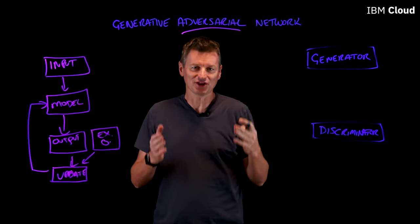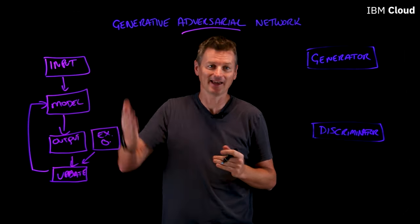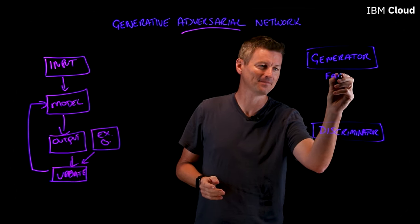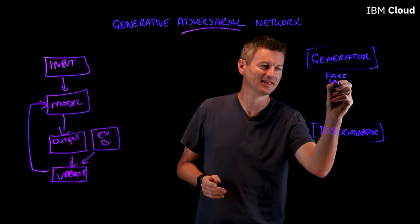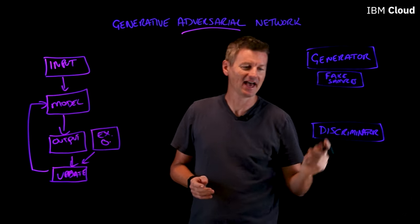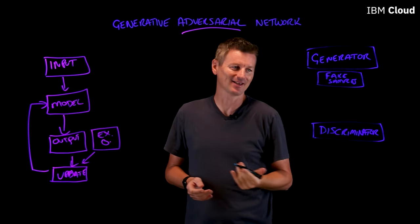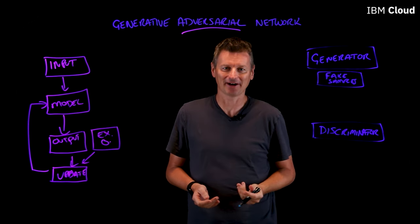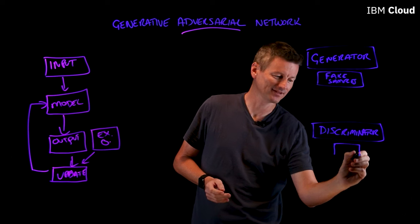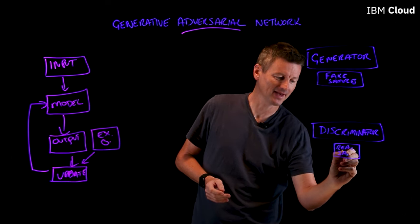The Generator's job is to create fake input or fake samples. And the Discriminator's job is to take a given sample and figure out if it is a fake sample or if it's a real sample from the domain.